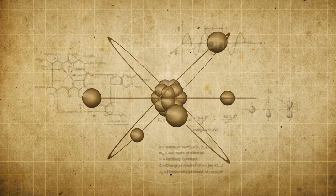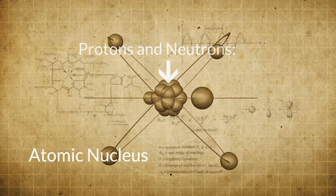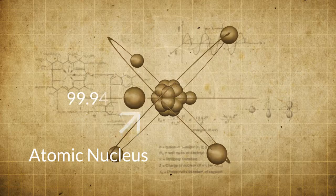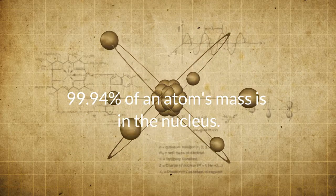The protons and the neutrons come together to form the atomic nucleus, which is in the center of the atom. More than 99.94% of an atom's mass is in the nucleus.